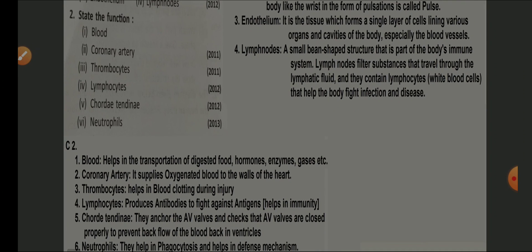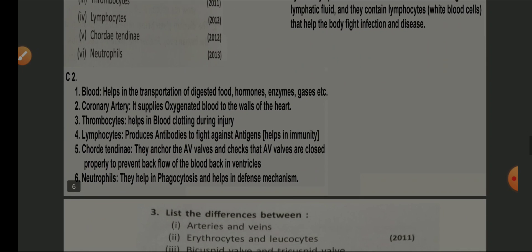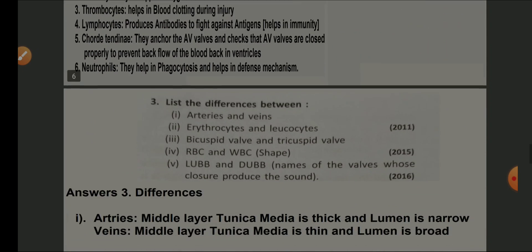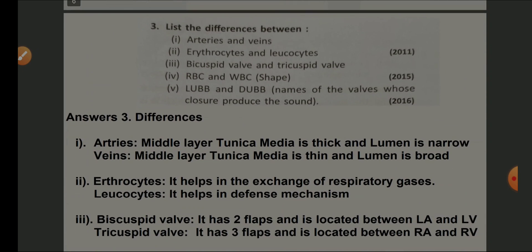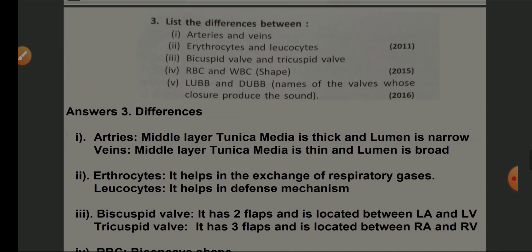These are the six functions mentioned from the textbook. Let us move on to list the differences between arteries and veins. Arteries: the middle layer, tunica media, is thick and the lumen is narrow. Veins: tunica media is thin and the lumen is broad.